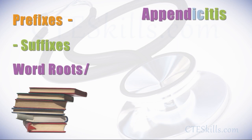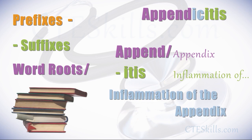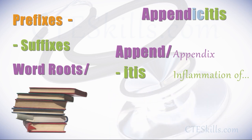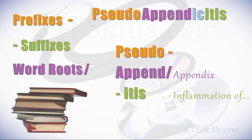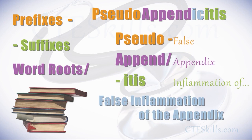Let's take a look at another example: appendicitis. The word root is 'append,' which refers to the appendix. The suffix is 'itis,' meaning inflammation of. So appendicitis is the inflammation of the appendix. If you add the prefix 'pseudo' to appendicitis, you get pseudo-appendicitis. Pseudo means false, so pseudo-appendicitis is a false inflammation of the appendix.